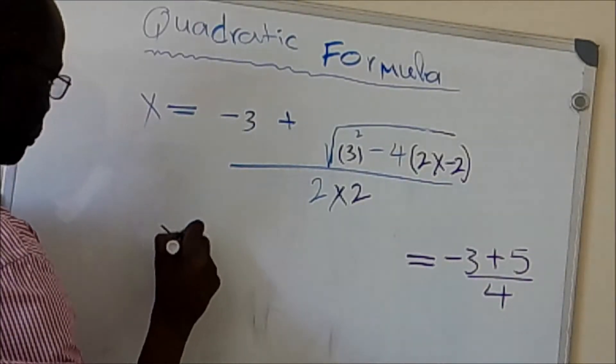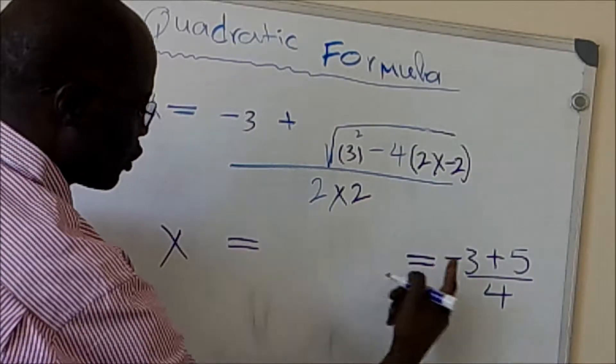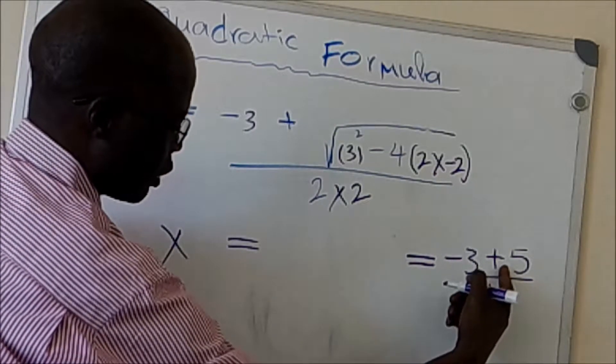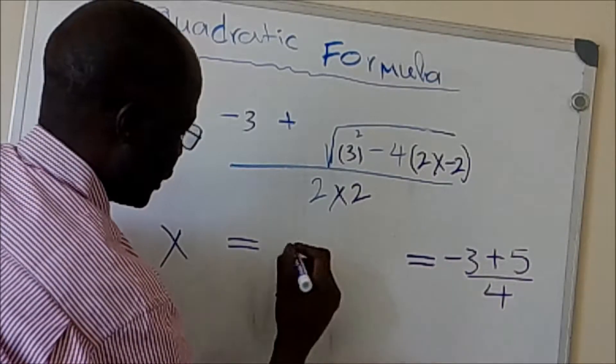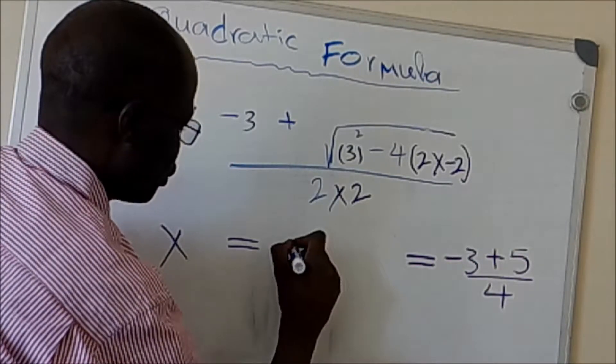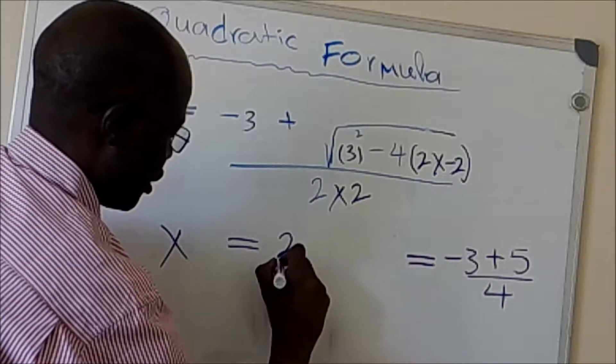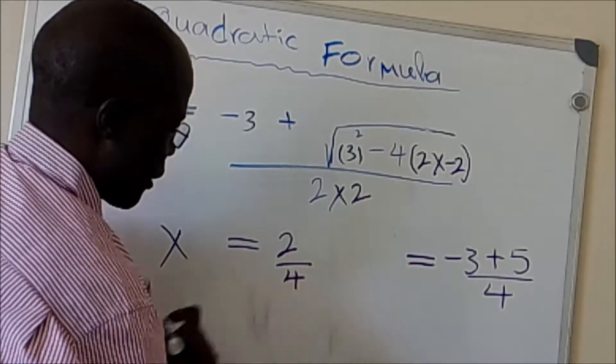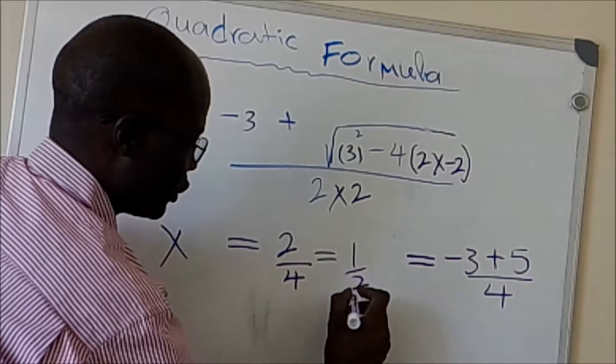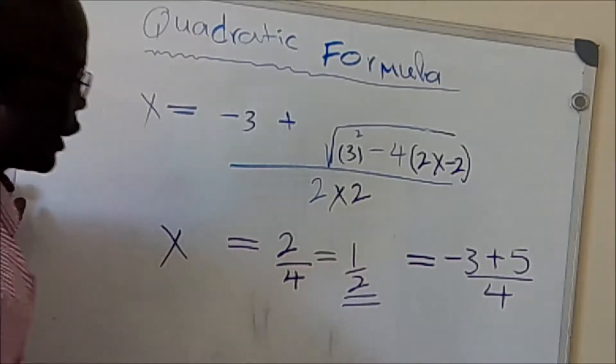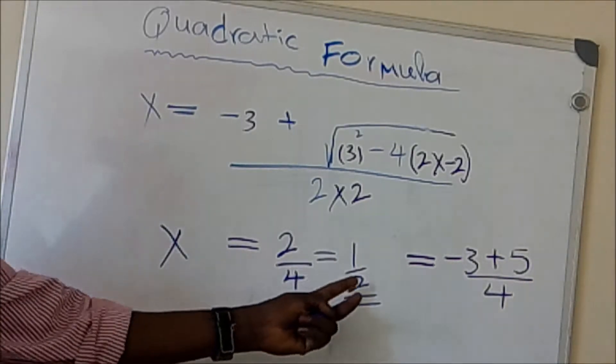So X... if you combine you're going to have 2 over 4, which simplifies to 1 over 2. This is the first solution: X equals 1/2.